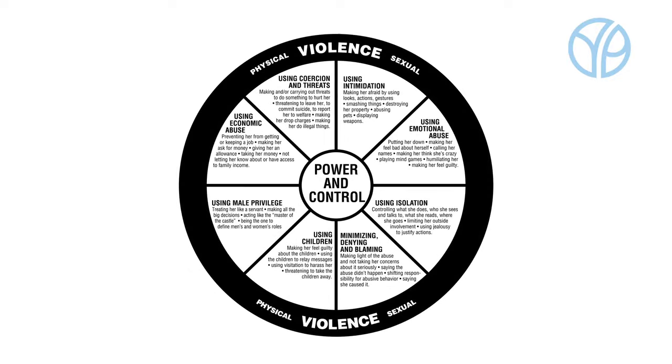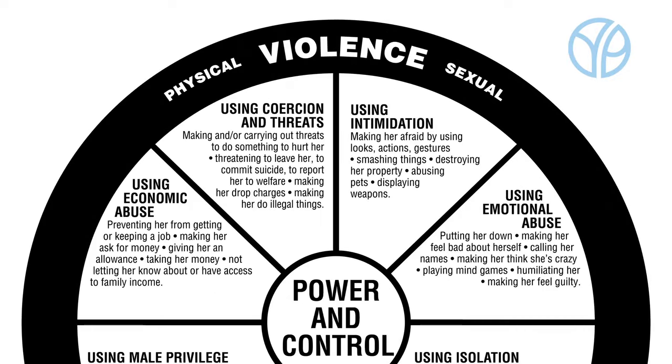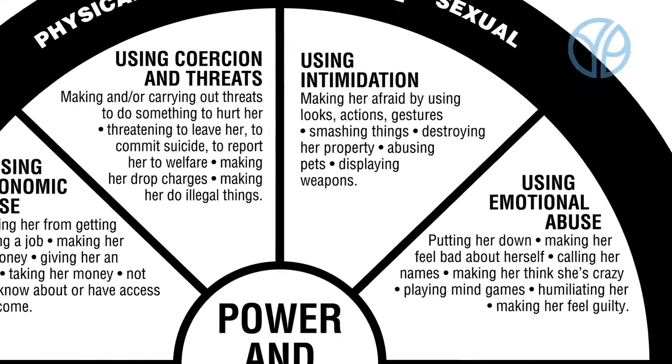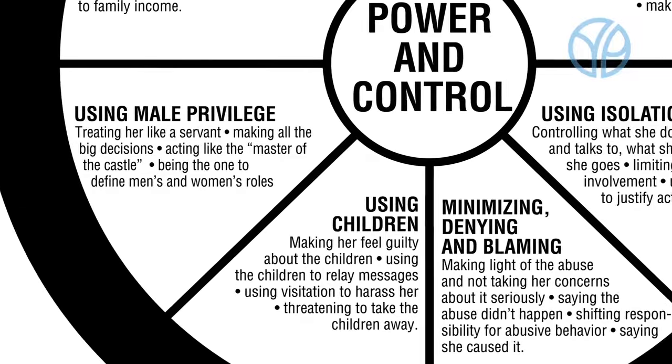When you look at the wheel, on the outside you see this physical and sexual violence, and then on the inside you see these eight different tactics and ways in which they achieve this dominance over their partners.